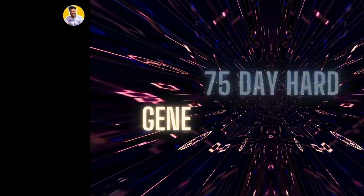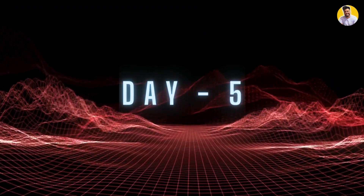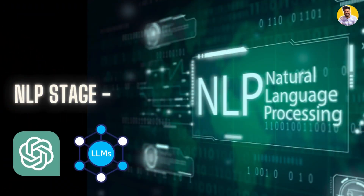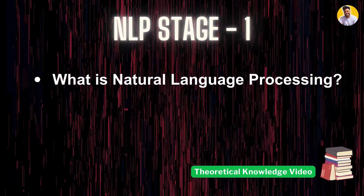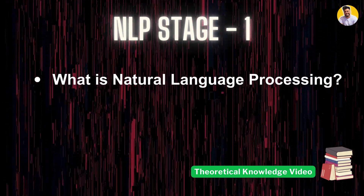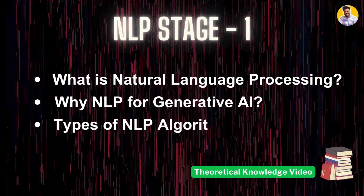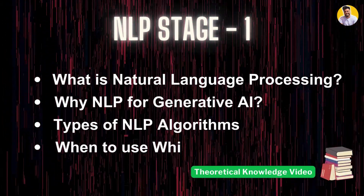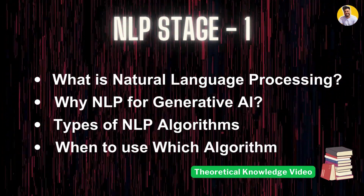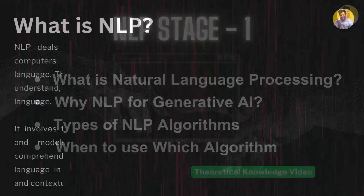Hello guys and welcome to Freebird's Queue. This is the 75-day hard generative AI learning challenge, and this is day 5. In this video I will tell you about natural language processing — this is stage 1 of NLP. I'll cover what NLP is, why NLP is used in generative AI, the different types of NLP algorithms, along with their pros and cons, and when to use them.